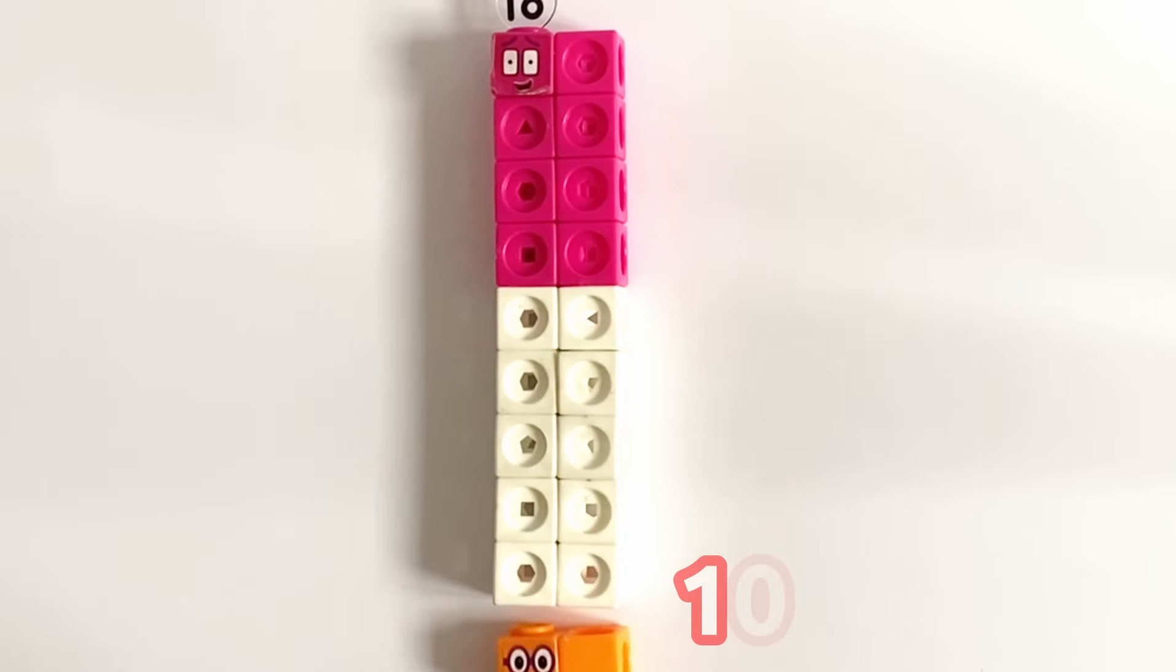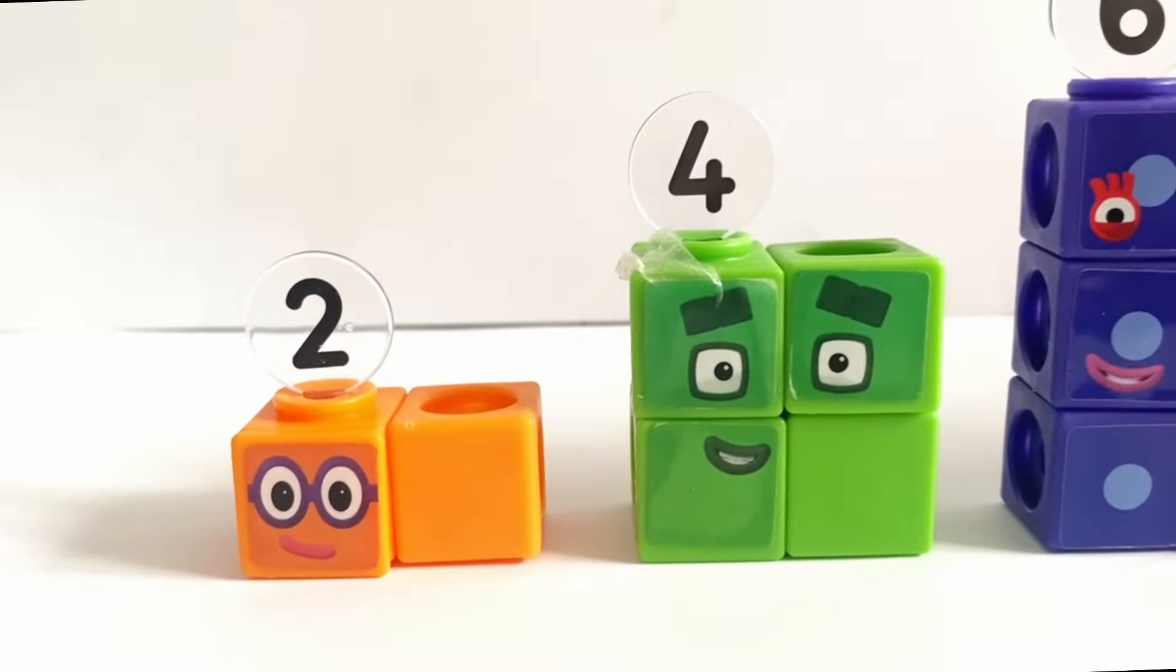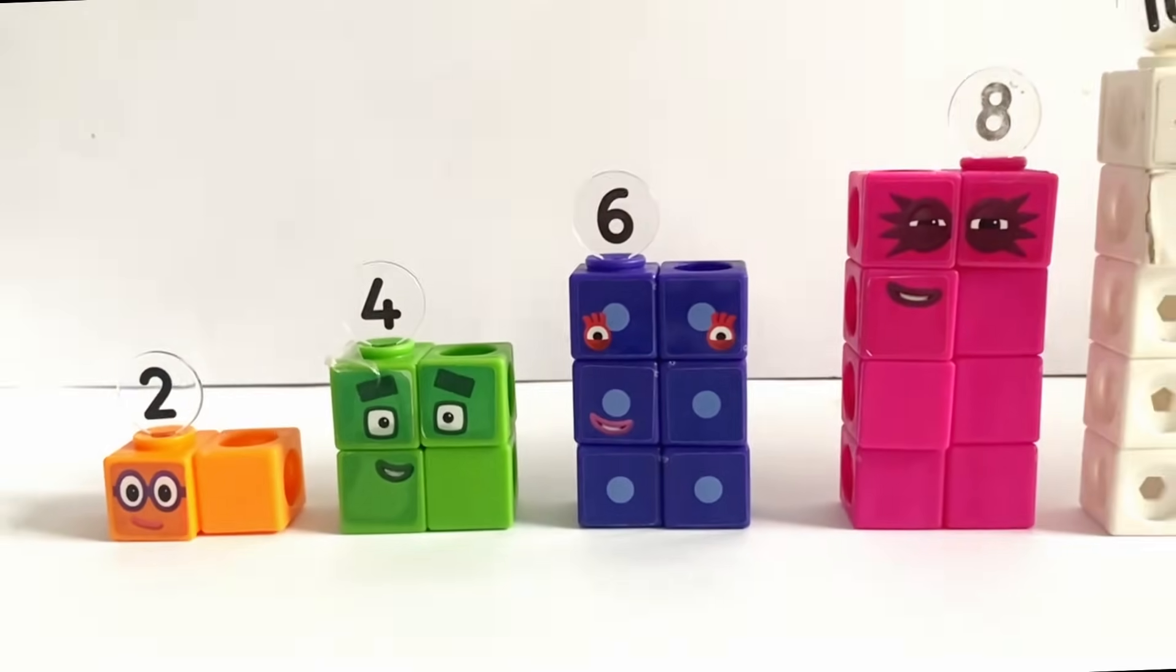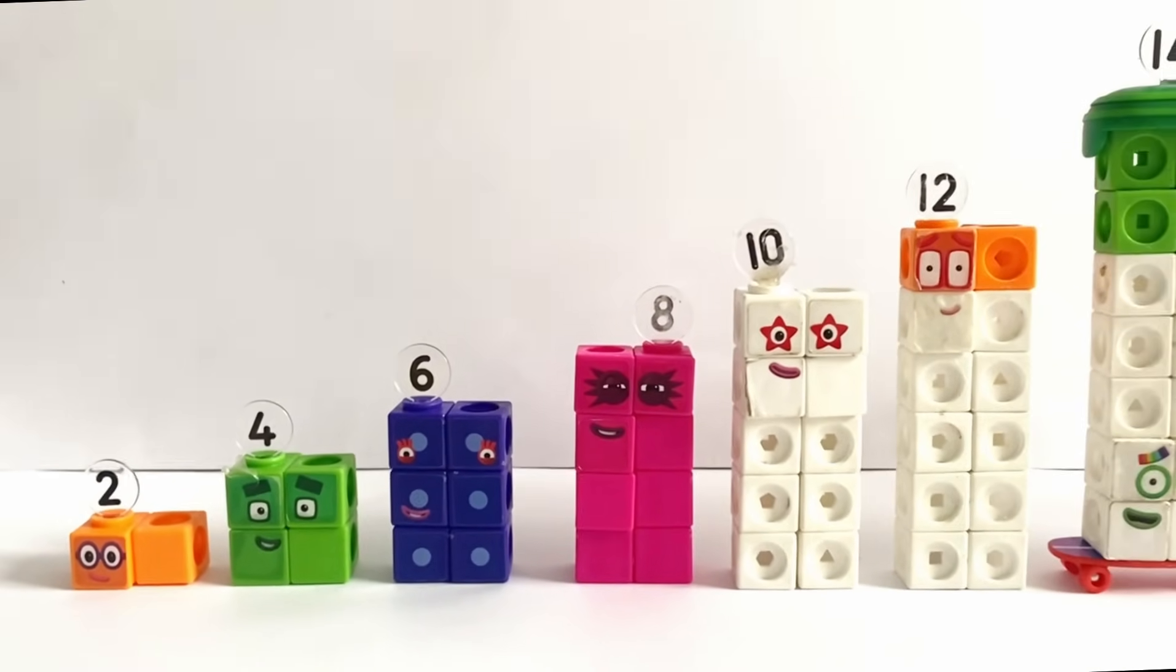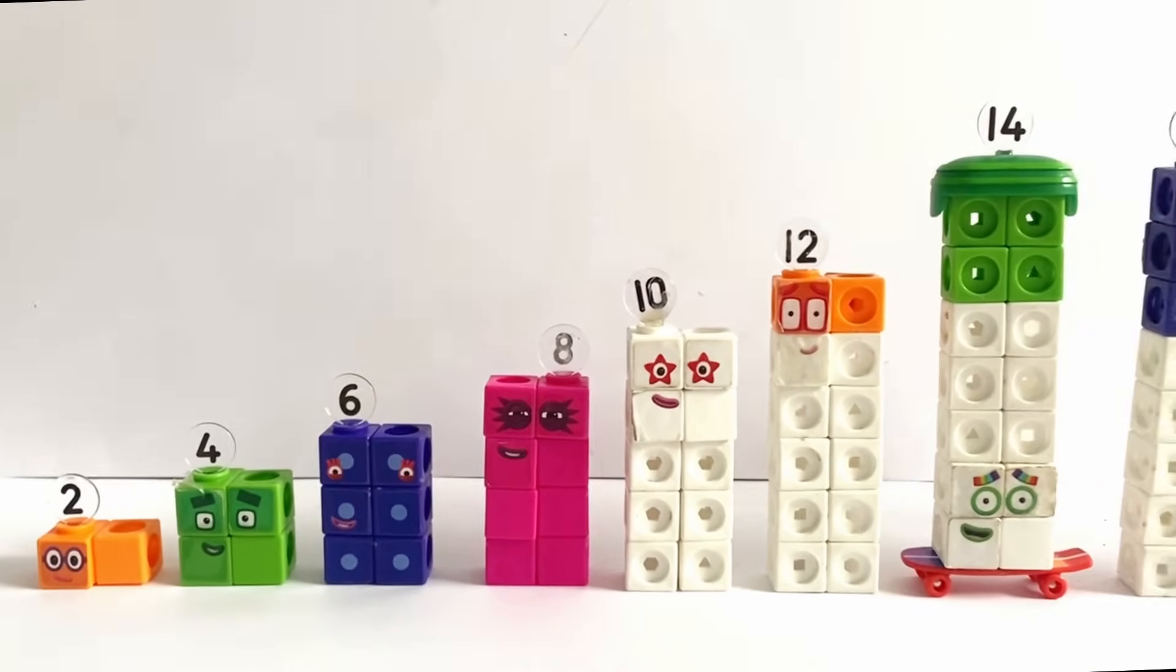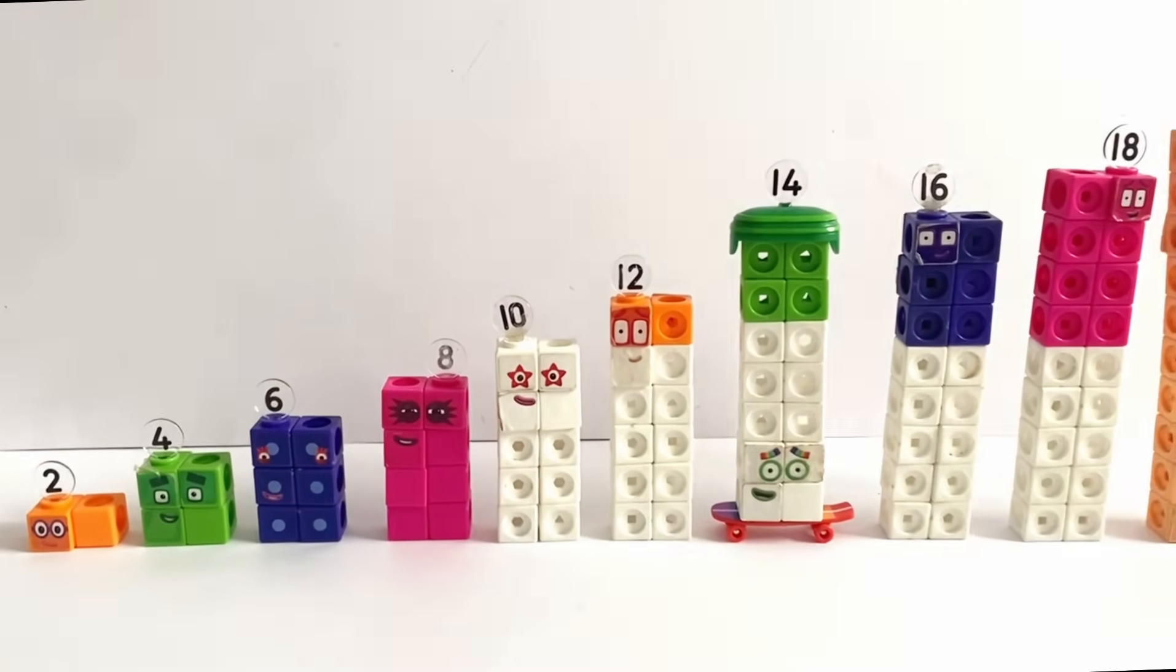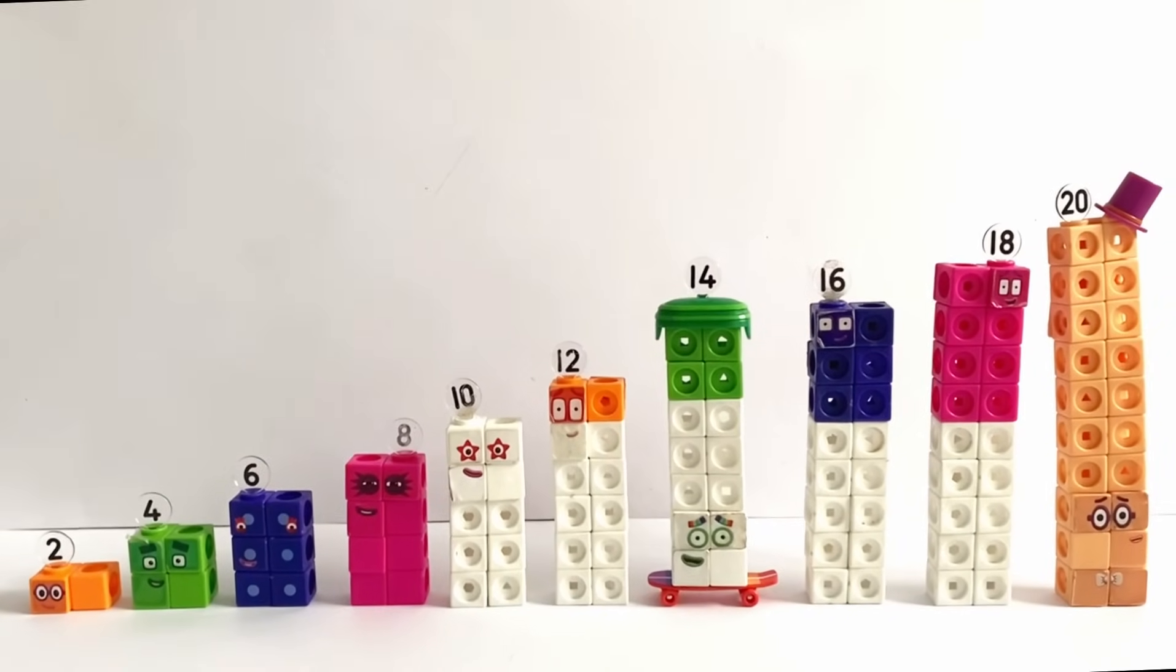And lastly, 10 lots of 2's are 20. And here we have the finished 2 times table up to 20. 2, 4, 6, 8, 10, 12, 14, 16, 18, and 20.